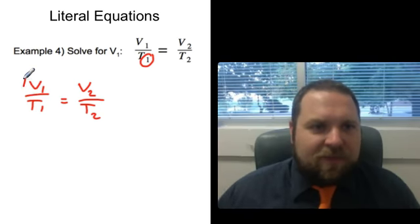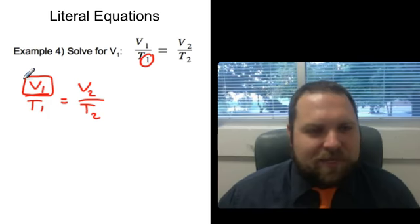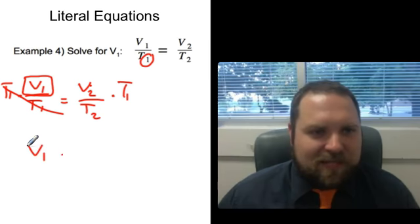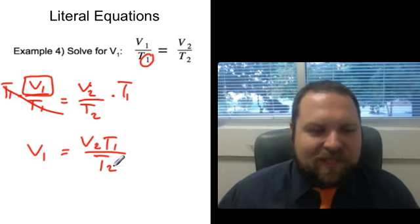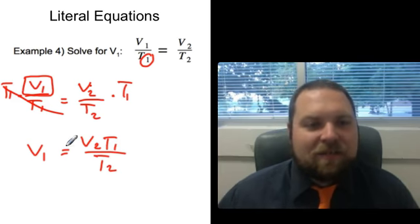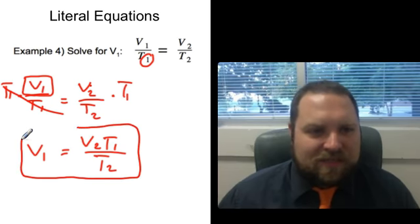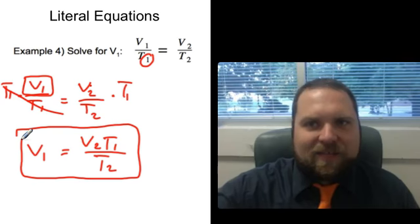We want to solve for V1, which means we want to get that V1 by itself. The thing that's keeping us from having V1 by itself is that we're dividing by T1. So to undo dividing by T1, we simply multiply by T1. And so these cancel, leaving me with V1 by itself. And over here, I've got V2 over T2 times T1. When I take a fraction and I multiply it by a whole number, I can just list that whole number up in the top. Just like that. Just like everything that was divided goes on the bottom, everything that's multiplied can go on top. And now we see that V1 is equal to V2 T1 divided by T2.